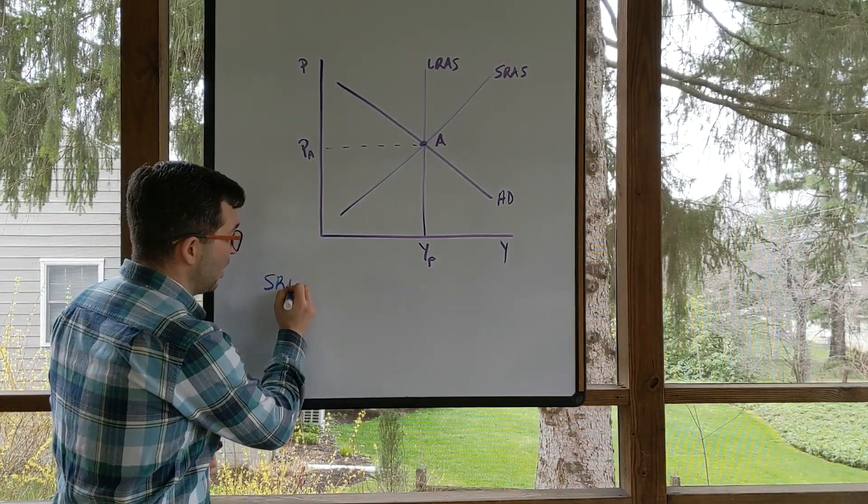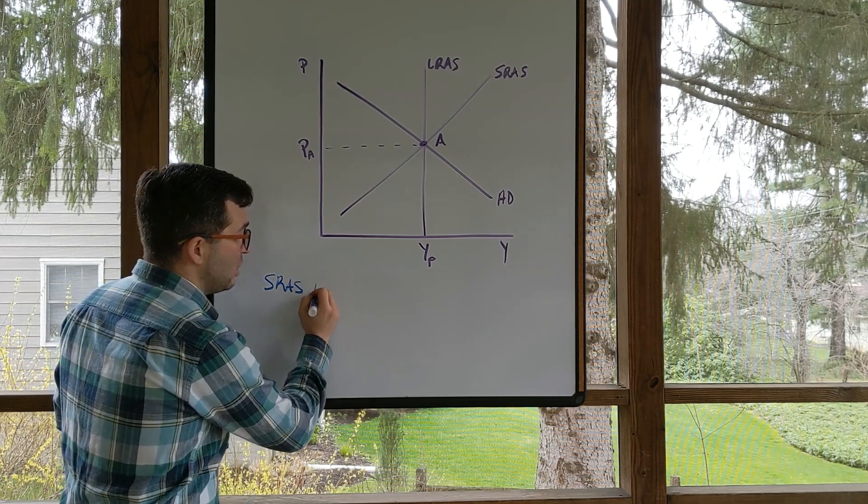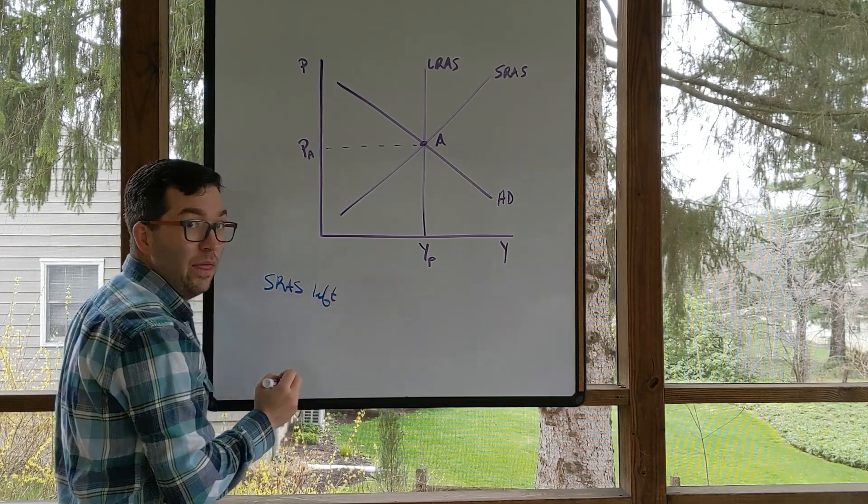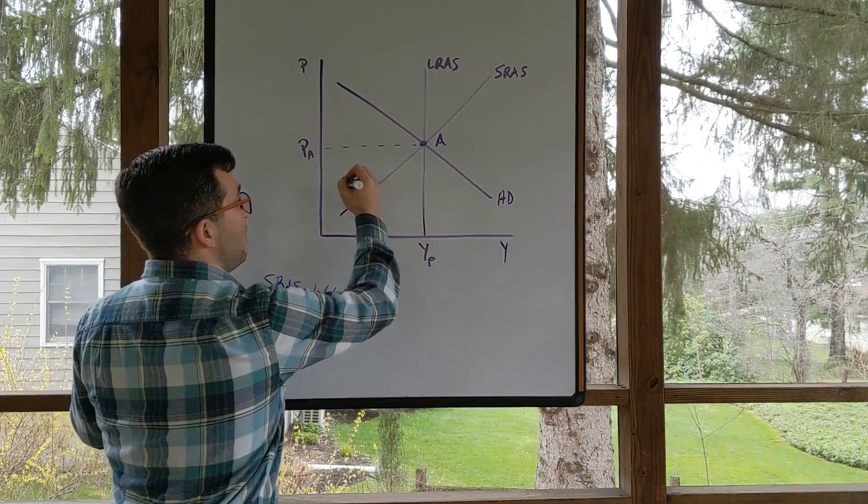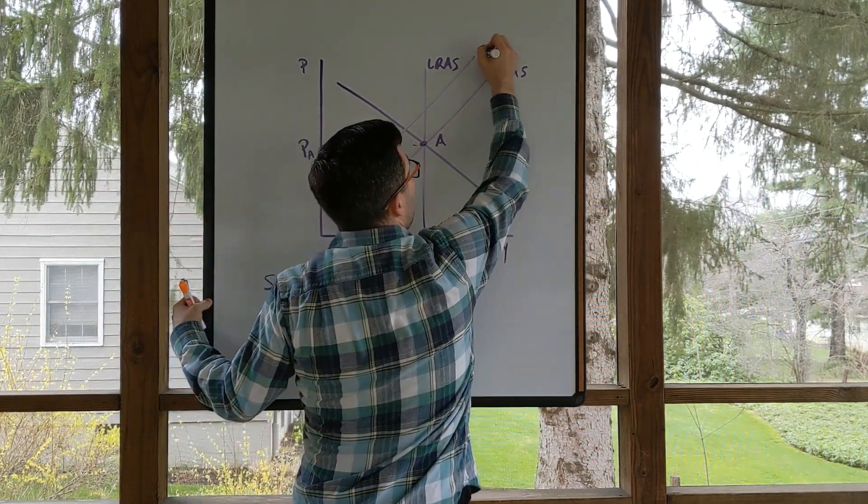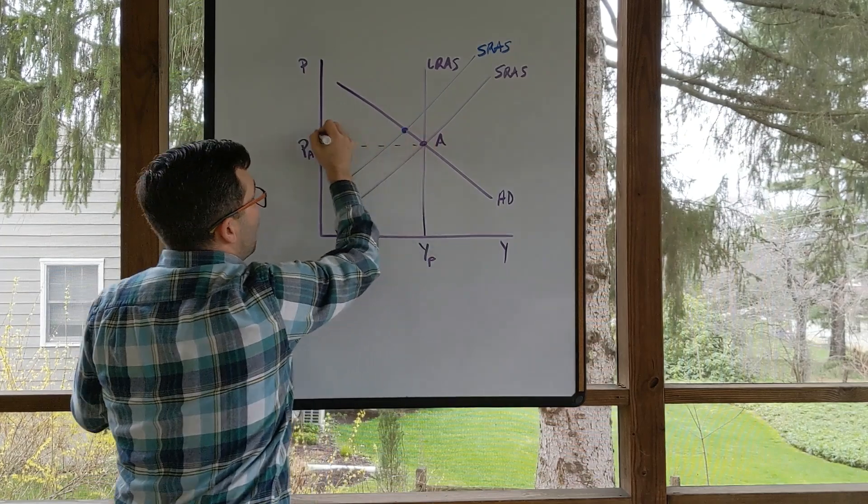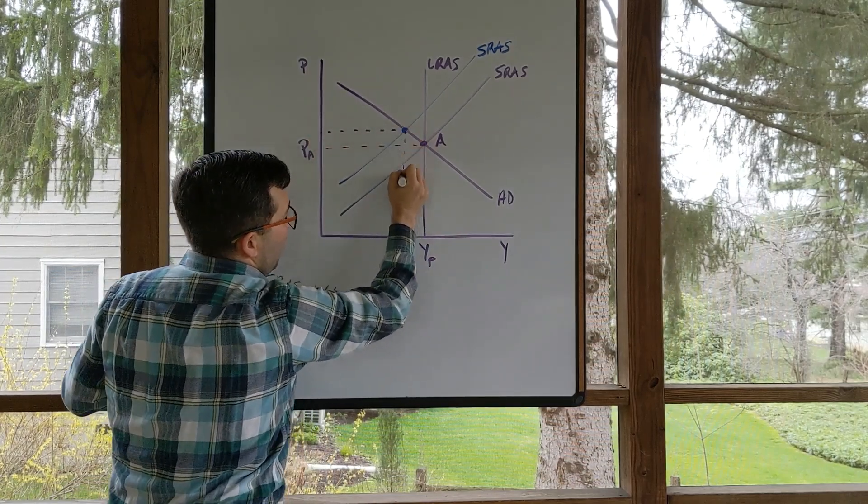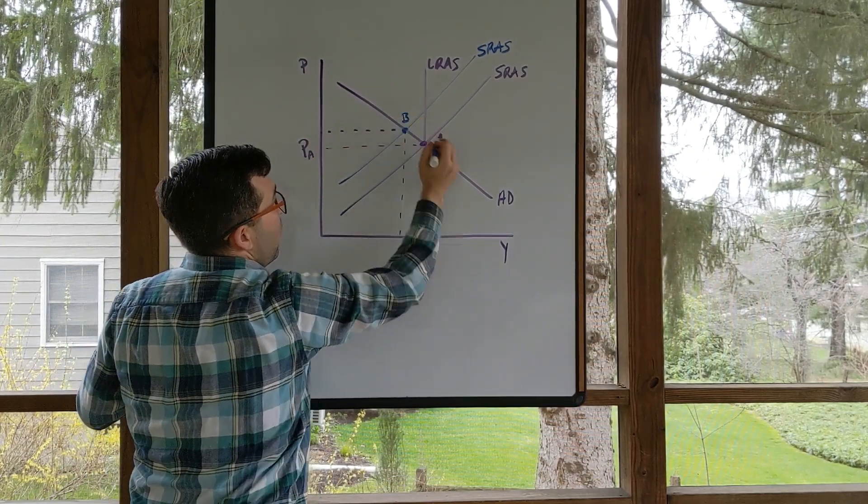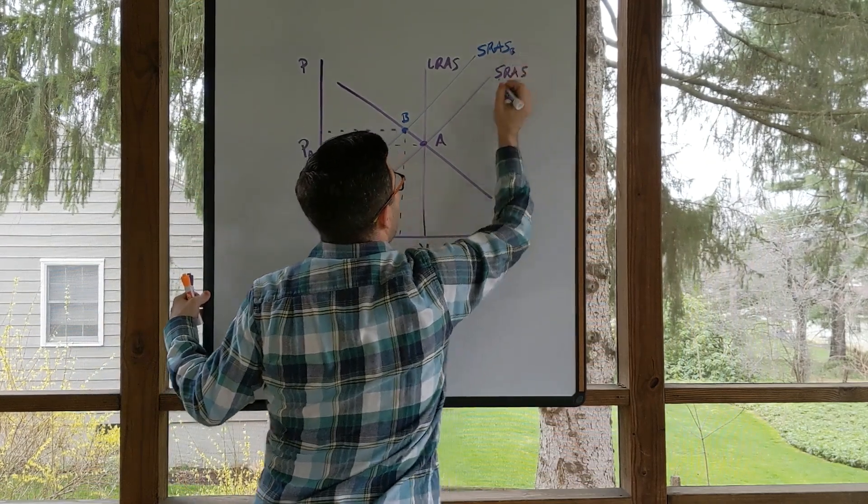We would see short-run aggregate supply actually shift to the left to begin with. This would be shown by a leftward shift in short-run aggregate supply, creating this short-run equilibrium here at point B. Let's call the short aggregate supply point B.